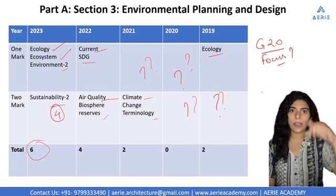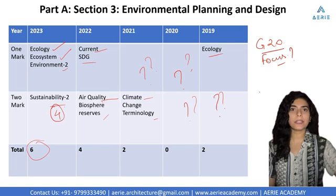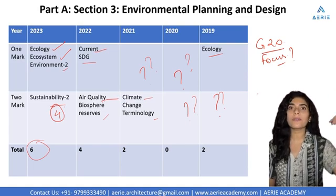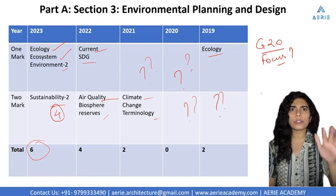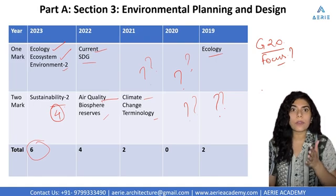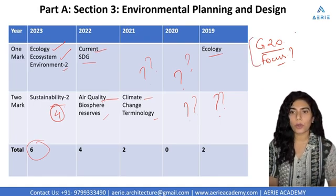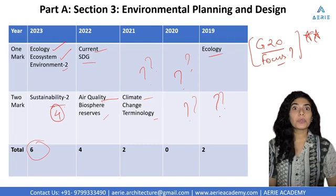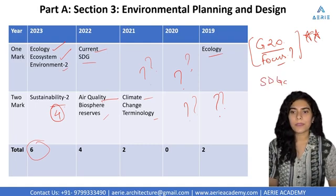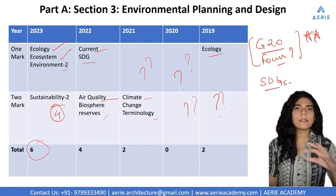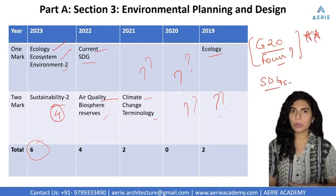You also need to know the name of the building, the architect of the building, what the previous building was called, and the name of the architect of that previous building. Everything related to G20 is important because it's a current topic. Then your SDGs — there are 17 sustainable development goals and you need to know them.